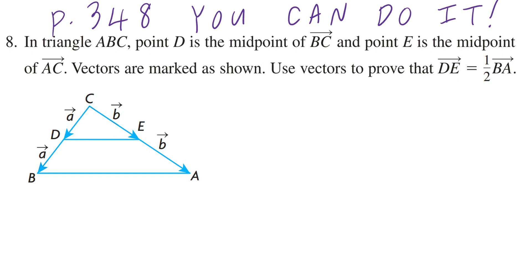Hi everyone, let's take a look at number 8 on page 348. In triangle ABC, point D is the midpoint of vector BC and point E is the midpoint of vector AC. Vectors are marked as shown.